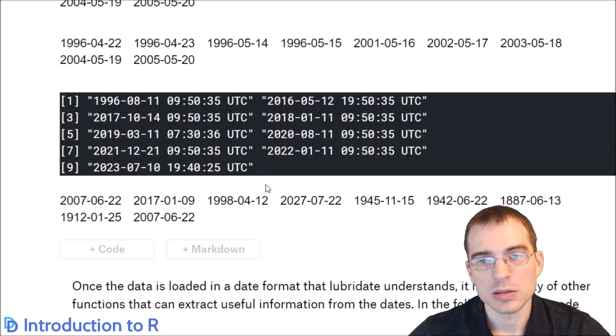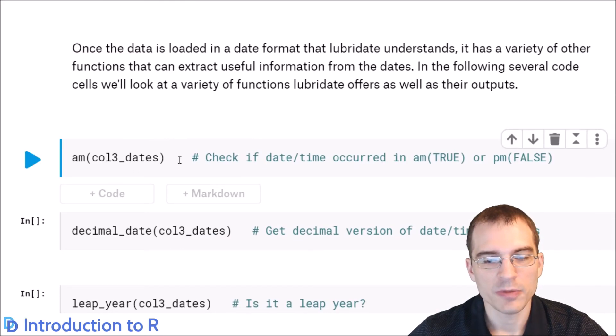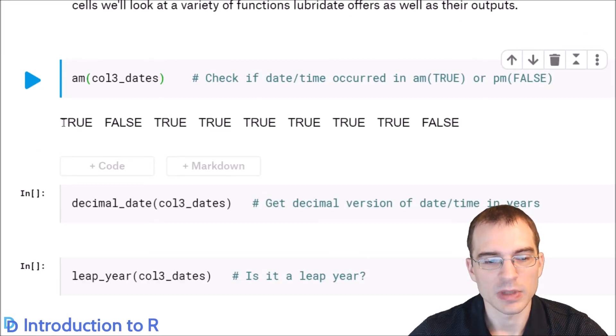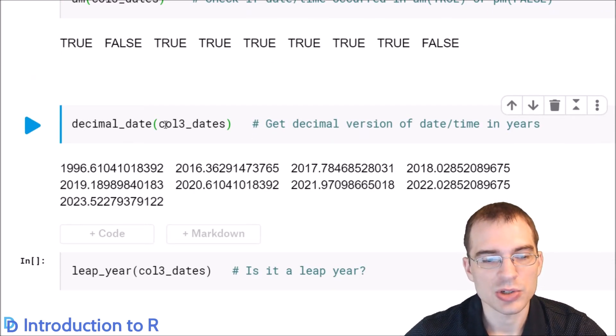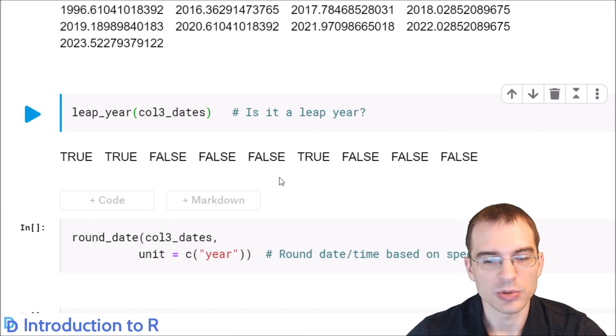Once the data is loaded into date time formats that Lubridate can work with, it has a variety of functions you can use to extract certain features that might be useful. For instance, am will check if the date time is in AM or PM, giving true or false. You can get the decimal version of the date in years using the decimal_date function. You can check if something is a leap year with the leap_year function, which returns true or false.